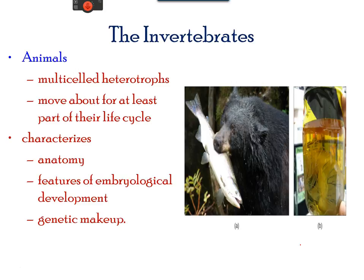The animal kingdom consists of multicellular eukaryotes. Animal evolution began 600 million years ago, with the primitive creature having a basic lifestyle. Over time, the anatomy, embryological development, and genetic makeup evolved to a more complex creature.